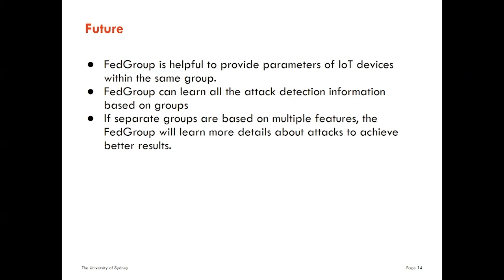If we want to fix voice recognition attacks, for example, the central model will study the parameters in the voice recognition group and learn what kinds of attacks make the system vulnerable. Therefore, all IoT devices within the voice recognition category will benefit from it. Lastly, if separate groups are based on multiple features, Federated Group will learn more details about attacks to achieve better results. For instance, a smart door product contains many features to open the door — app control, fingerprint recognition, entering a password, scanning a smart card, or using a key. The product can be grouped into many categories based on features. If the smart door is under attack, the central model will tell us which specific part is under attack.